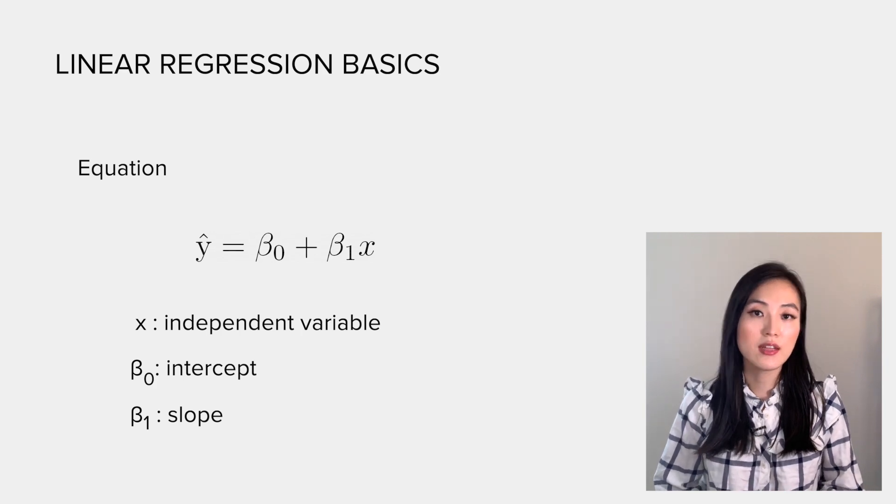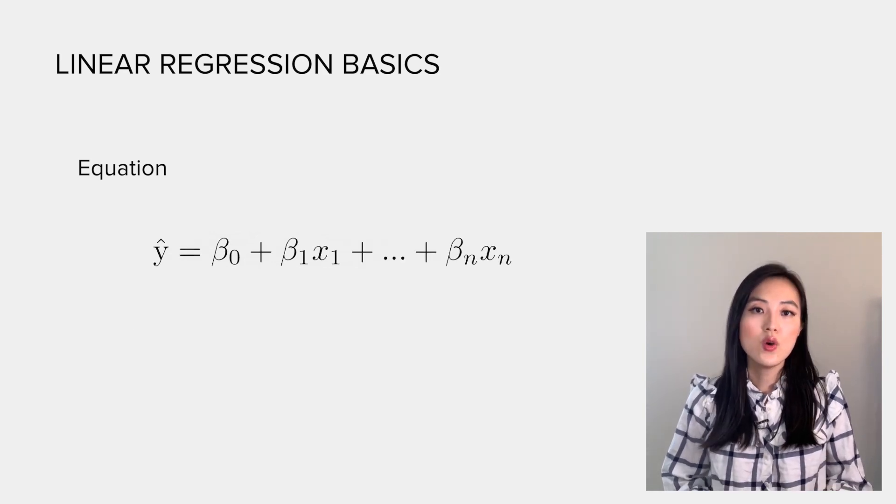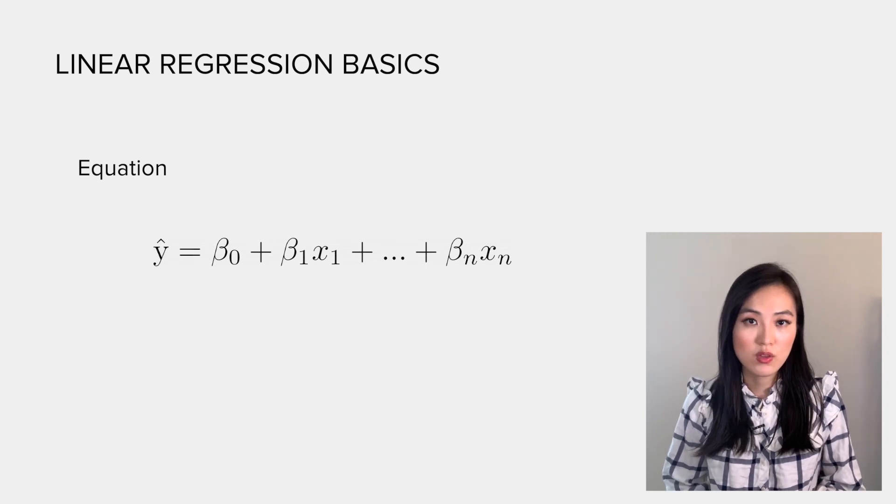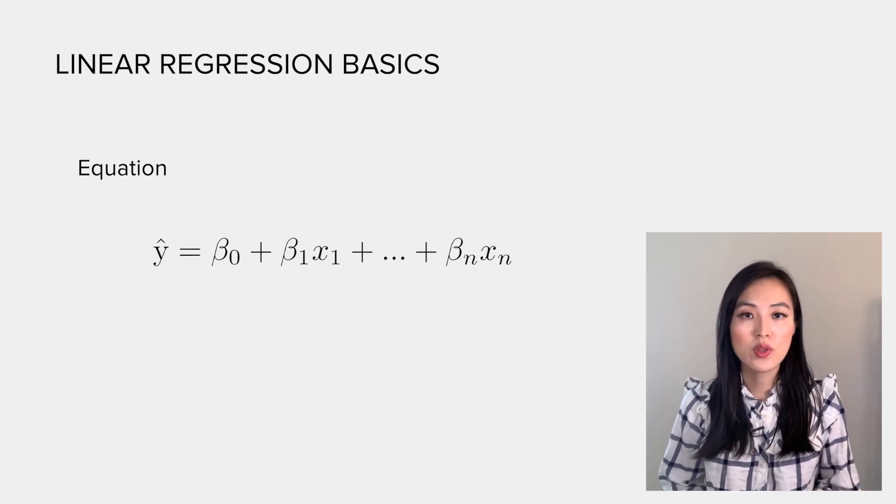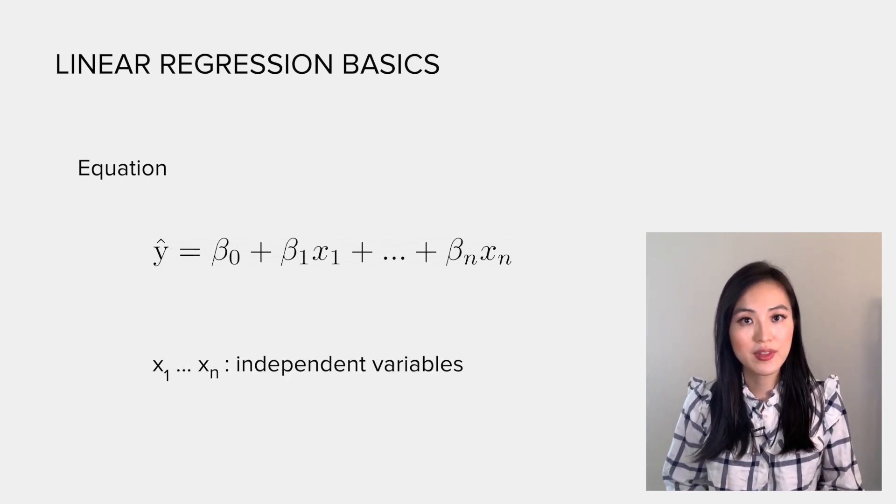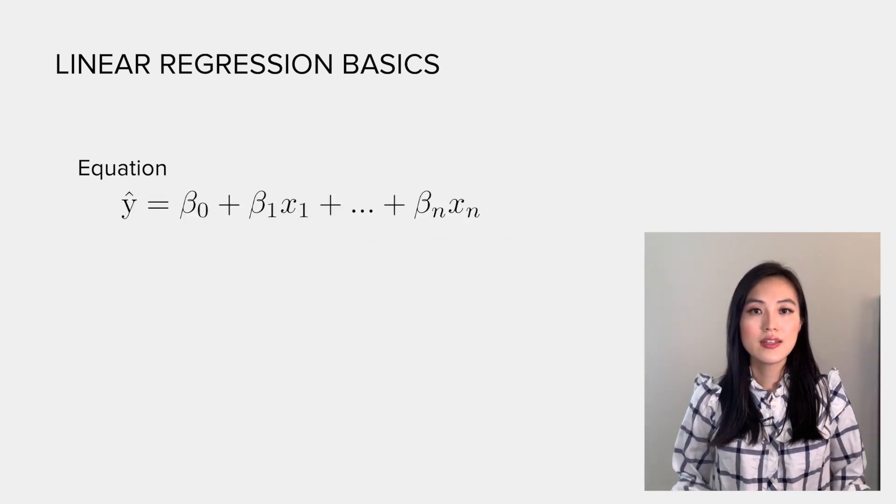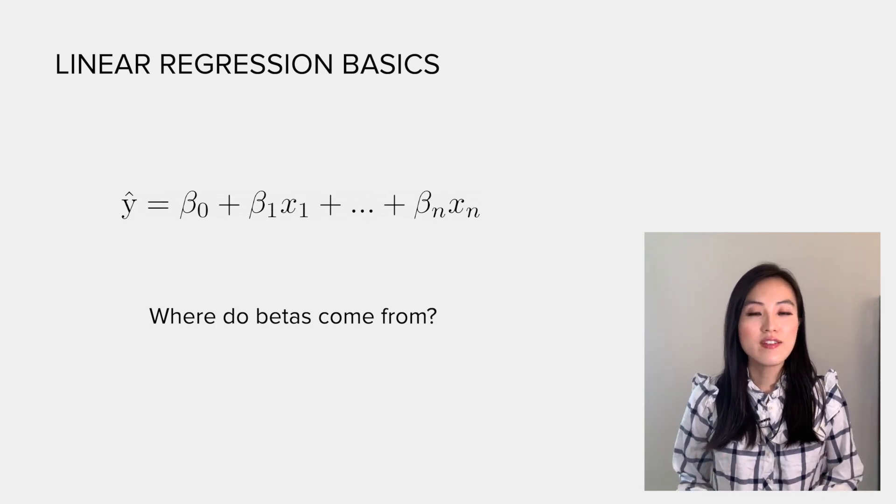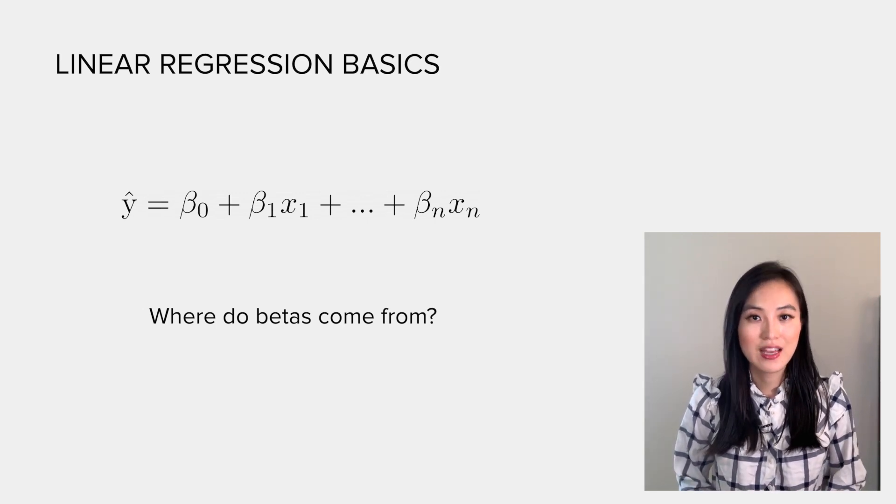Beta_0 is called the intercept and beta_1 is the slope. We could easily update the equation with more independent variables. Instead of using one x, we could have x_1 to x_n, and each represents an independent variable. Now you'll probably ask, where do betas come from or how to get the values of betas?